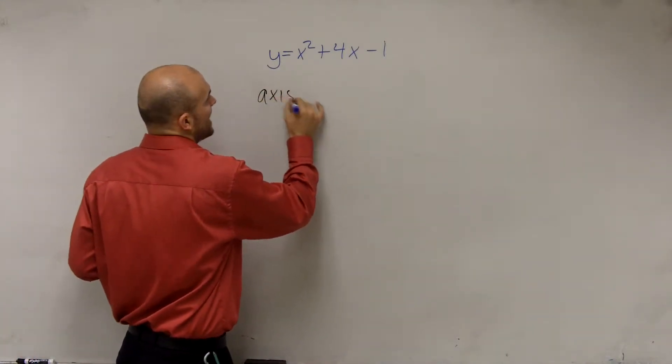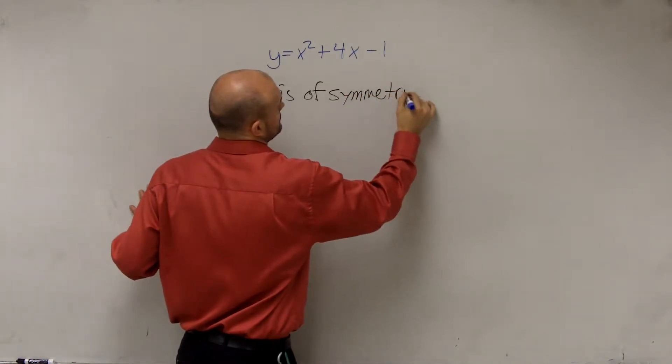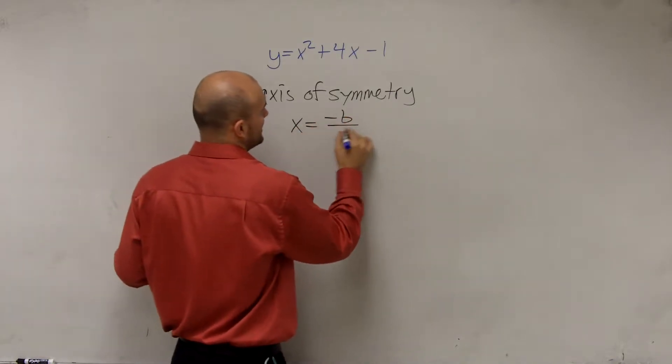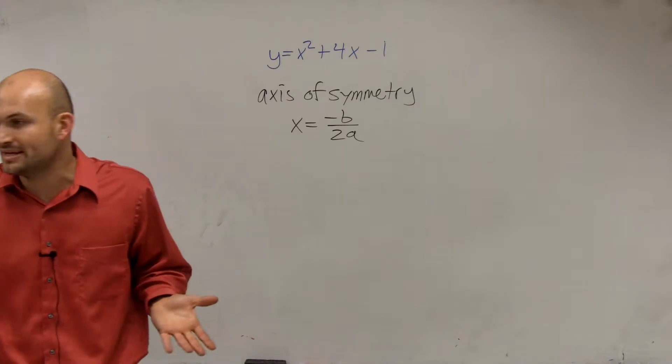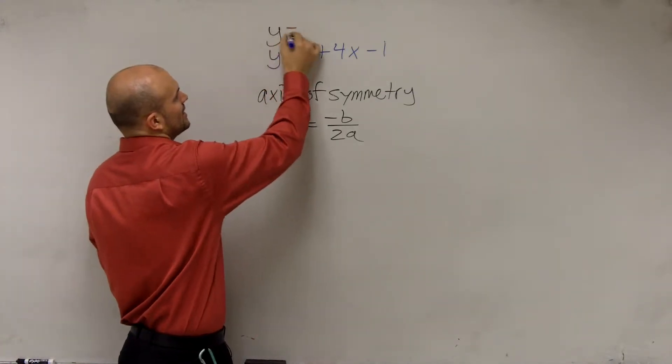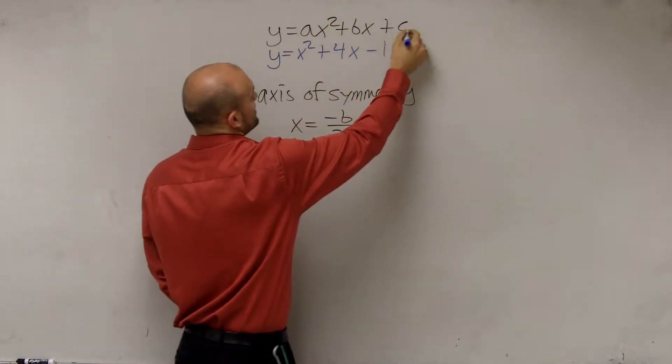Remember, the axis of symmetry goes in the form of x equals opposite of b divided by 2a. So all you guys need to do is determine what is a, b, and c. So usually our first step is we label a quadratic equation.